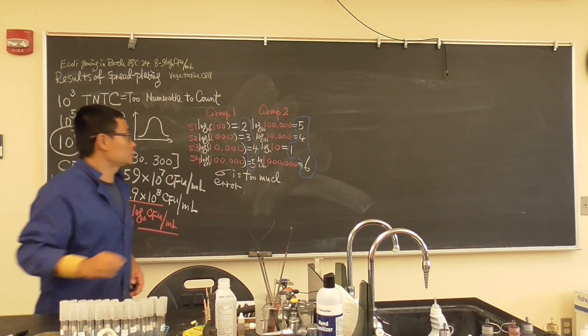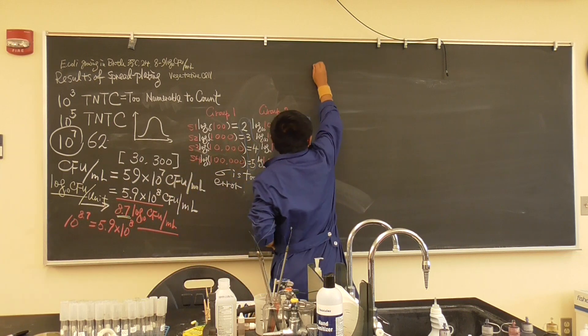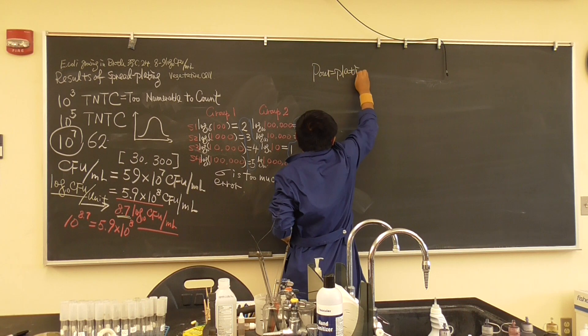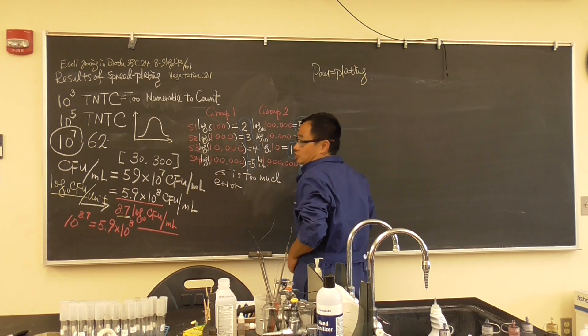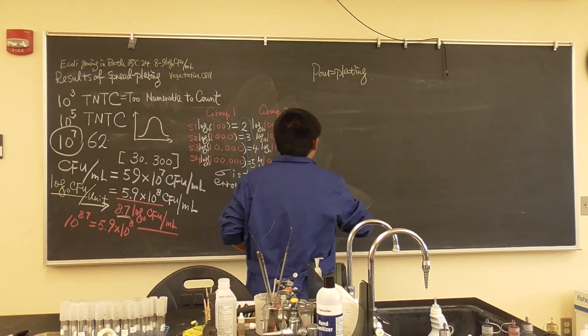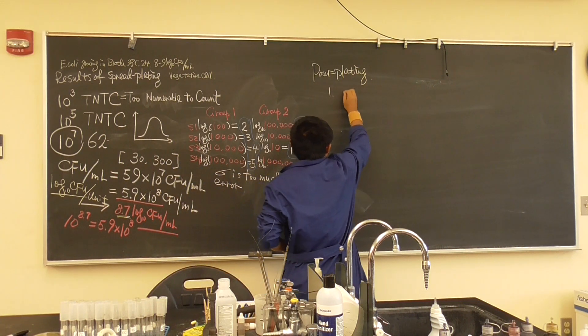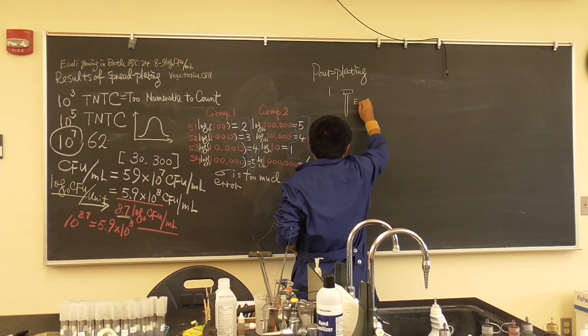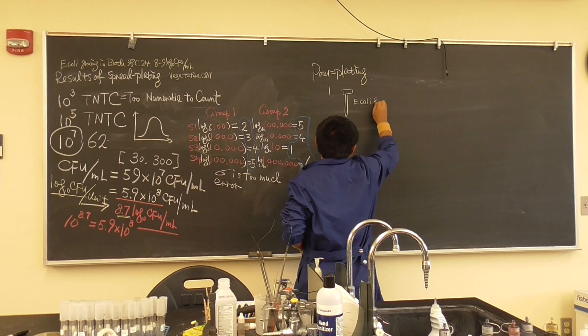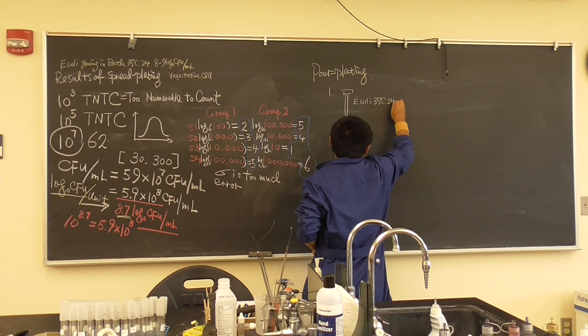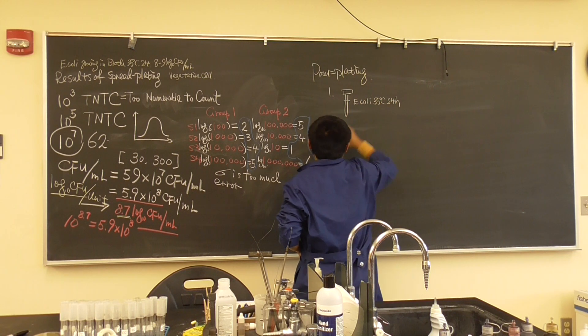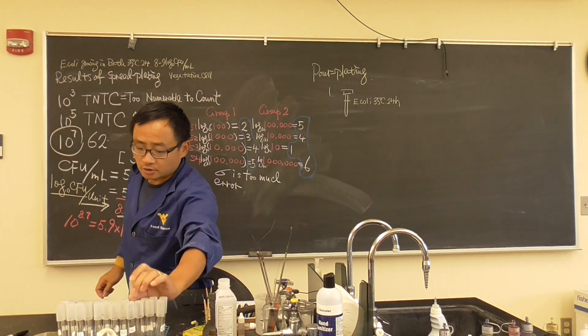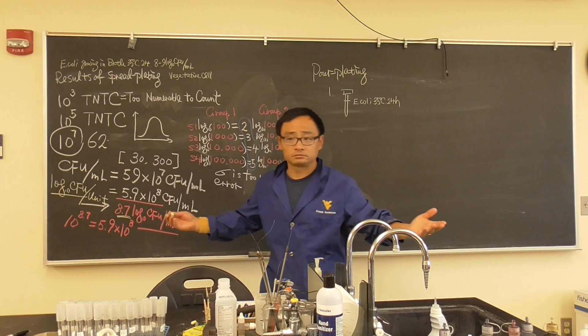Today we're going to do pour plating. The same procedure as before, so you do by yourself. How we do it? Everybody will get E. coli culture. This is the E. coli, grown at 35 degrees Celsius for 24 hours. There's lots of bacteria there.